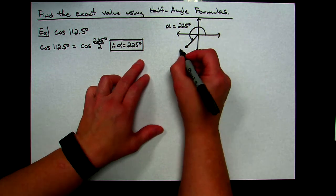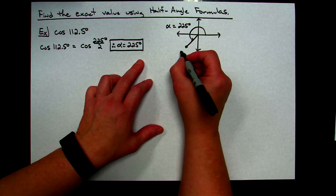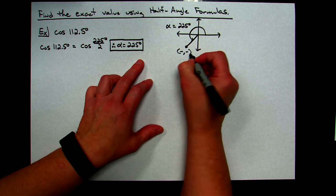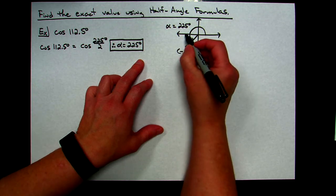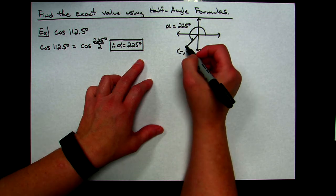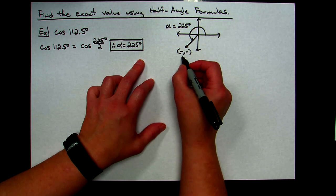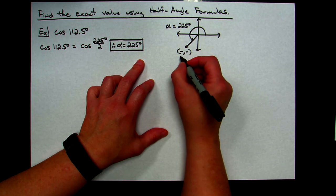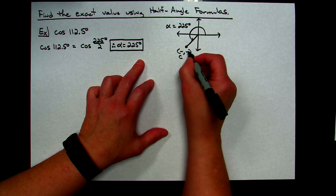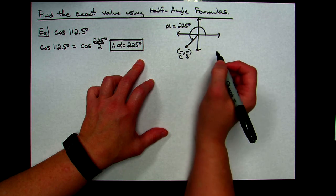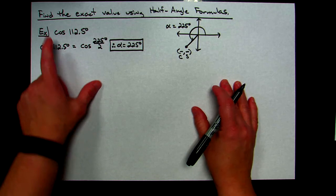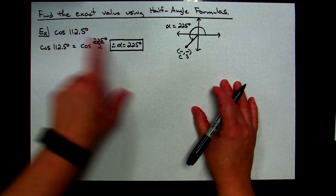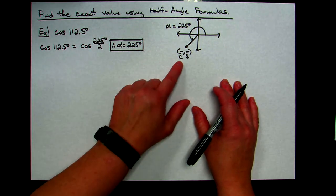Every ordered pair in the third quadrant is (negative, negative) because it takes negative to go left and negative to go down. In trig, the x-coordinate on the unit circle represents cosine and the y-coordinate represents sine. Since I'm doing cosine and I'm in the third quadrant, I'm going to use the negative sign in front of the square root in the formula.